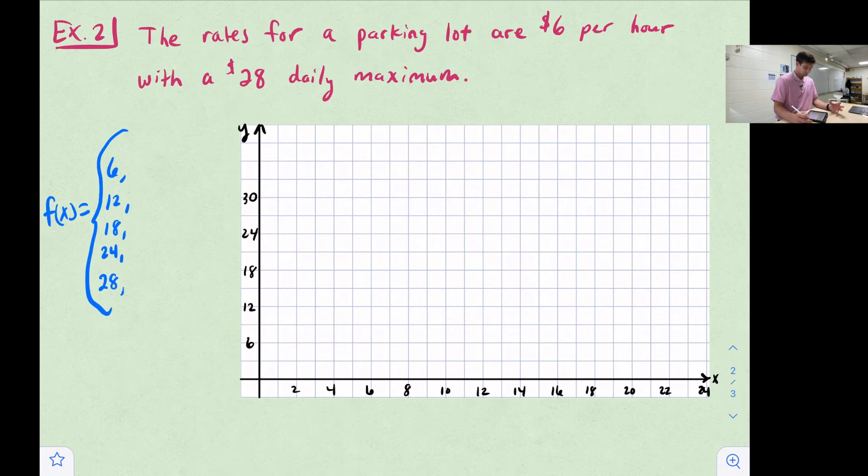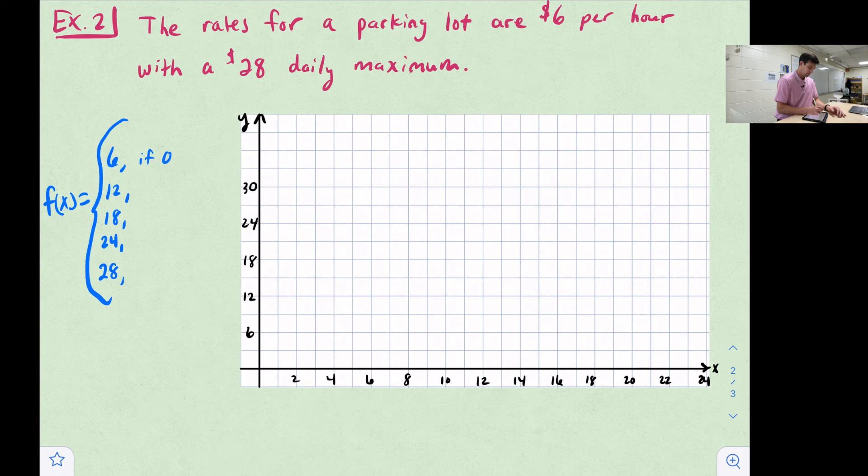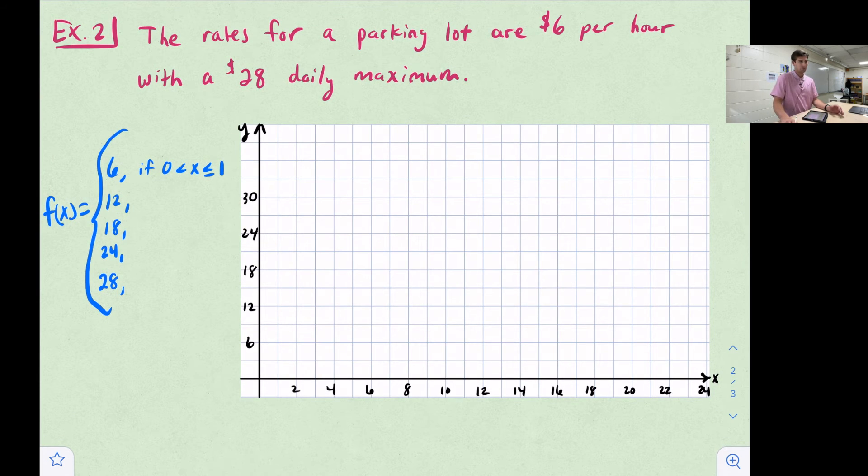Now we can write our domain restriction. This would be if we are between zero and one hour. The reason why we put the or equal to on one, it wouldn't make sense for us to put it on zero, right? Because zero means we're not parking our car in the parking lot. If we don't park the car, then we don't pay any money. But we pay $6 all the way up through the first hour. Now we can kind of follow this pattern. It's going to be $12 between one and two hours. Between two and three will be 18. Between three and four will be 24.